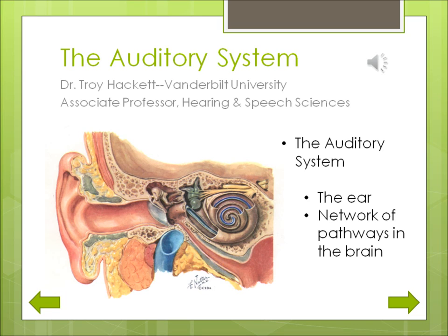The ability to hear and understand sounds is made possible by the auditory system. The auditory system includes the ear, which has many parts and a very complex network of pathways in the brain.